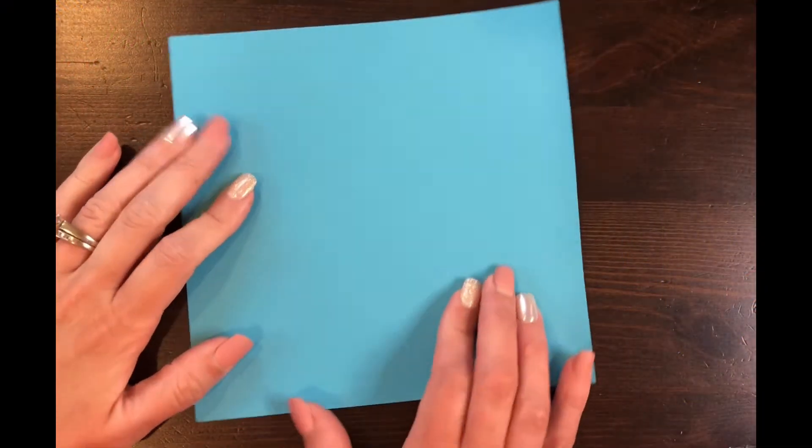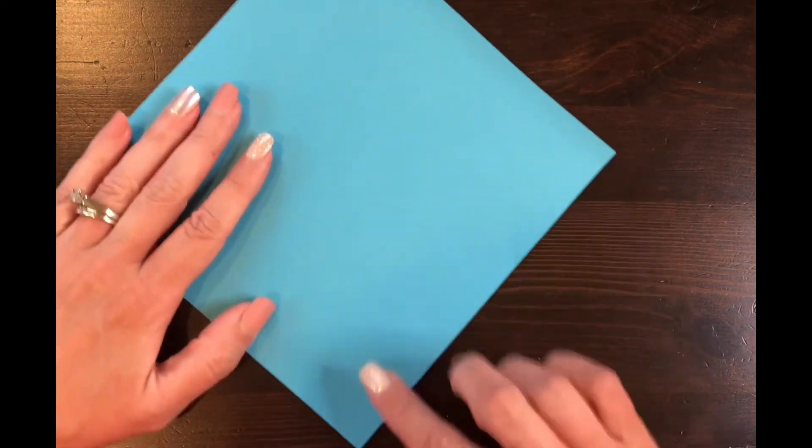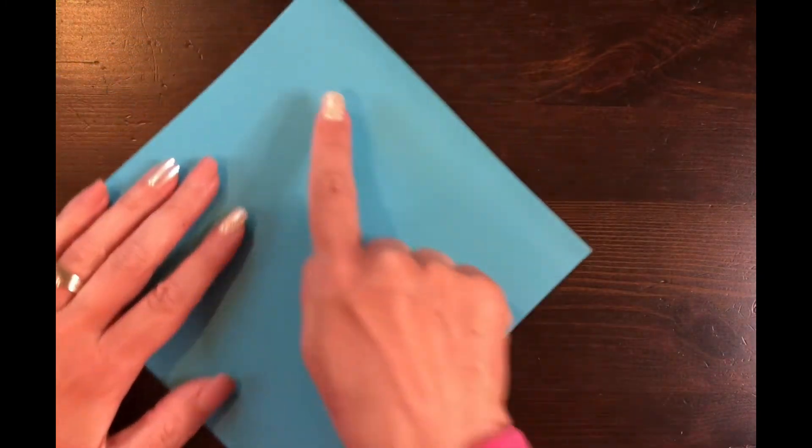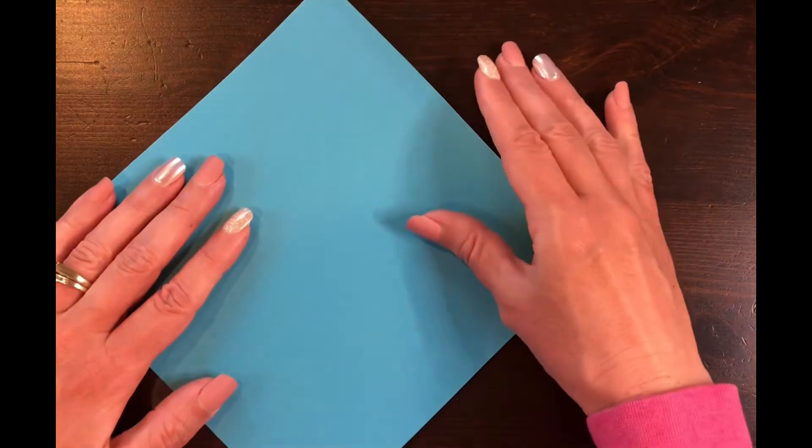We're going to take this square and turn it so it looks like a diamond. There should be a little point pointed to your belly button and then another point that's pointed away from you.